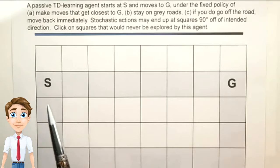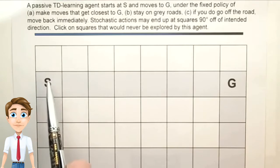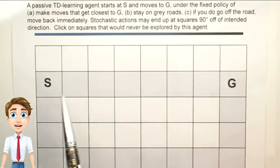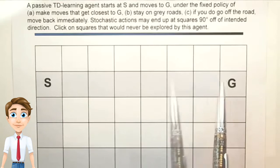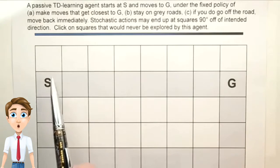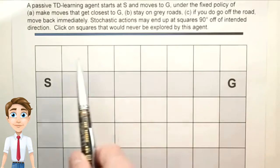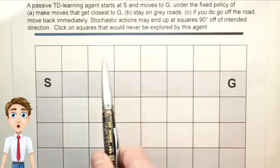And the answer is, according to the policy, the agent would prefer to follow this straight line because it's the most direct. Now, at any point, he might slip off to one of these squares, so those would all potentially be explored.